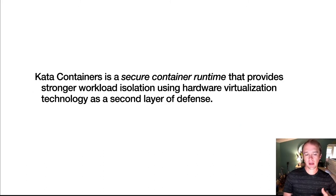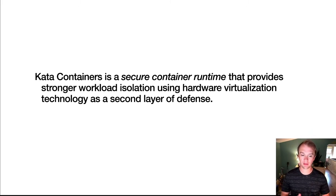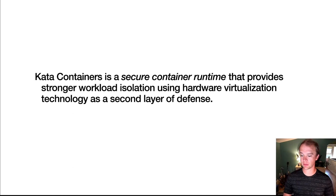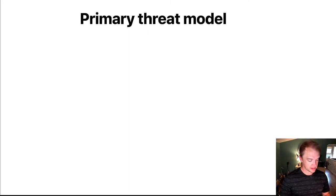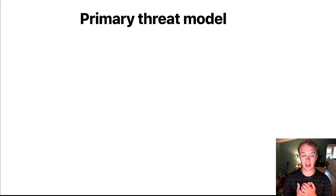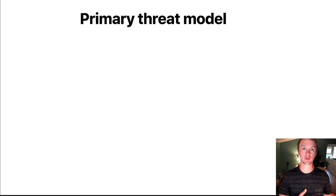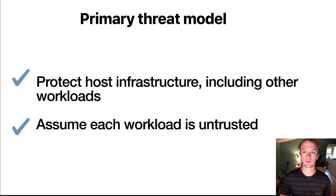As for the actual project, we're providing a secure container runtime. Defense in depth is always a good design pattern, and we're taking that approach with Kata Containers — taking container isolation and adding on top of that a second layer using hardware virtualization. From a threat model perspective, we don't trust the workload. If you imagine being an infrastructure provider doing remote code execution as a service, you want to protect your hosted infrastructure and the other workloads running on it. That is the primary threat model we have today with the project.